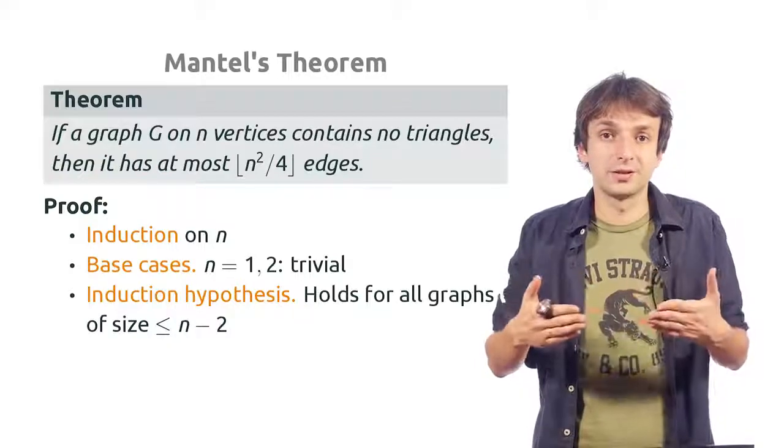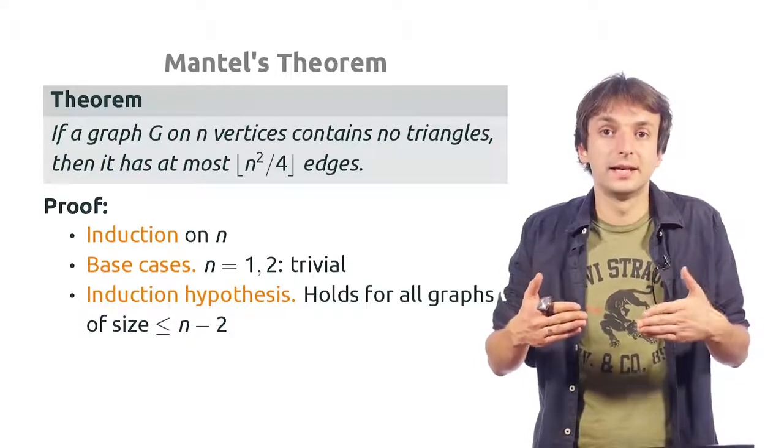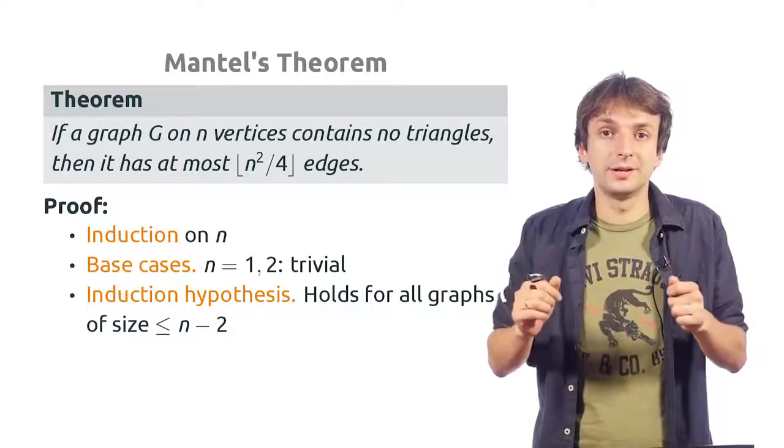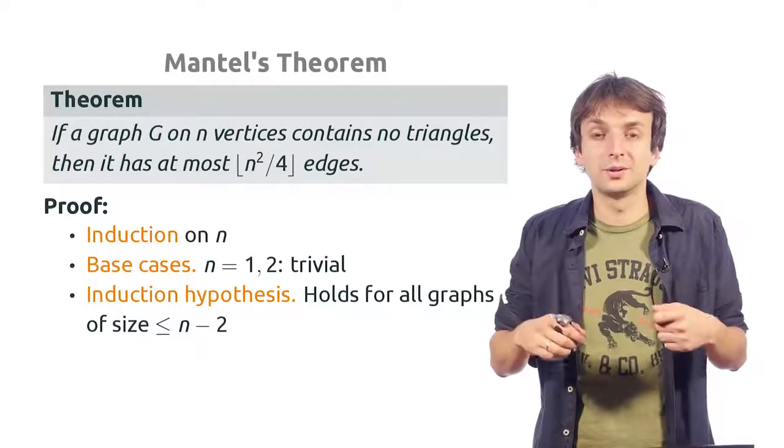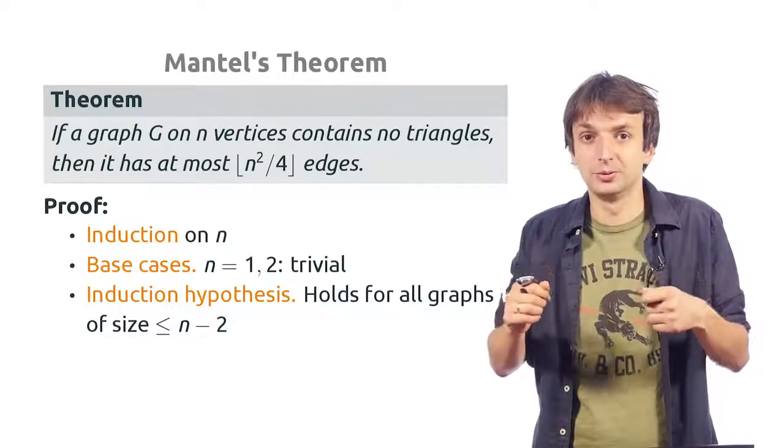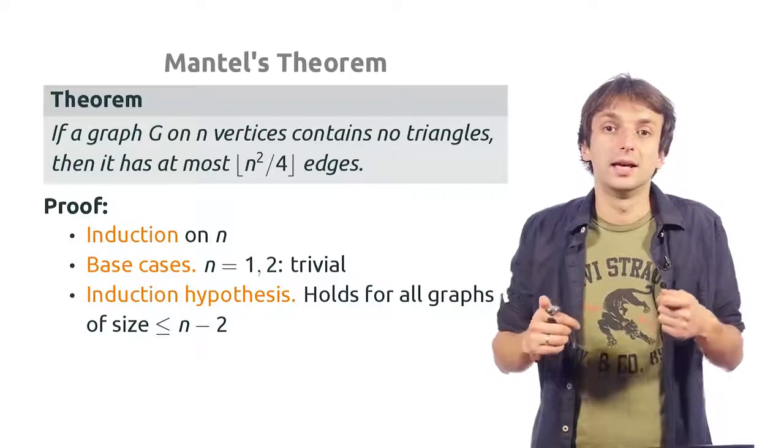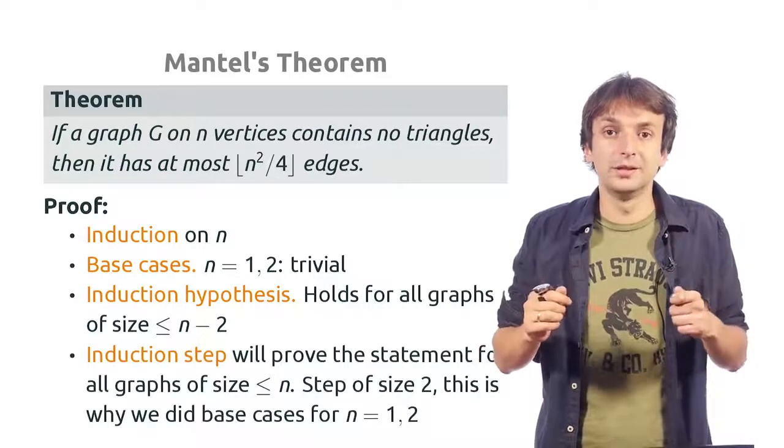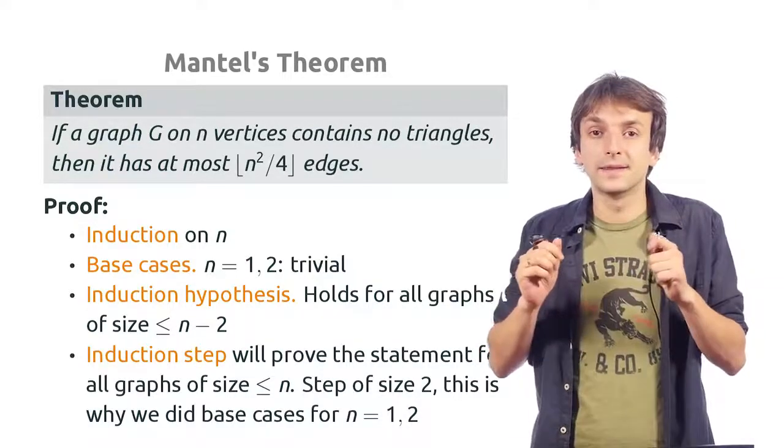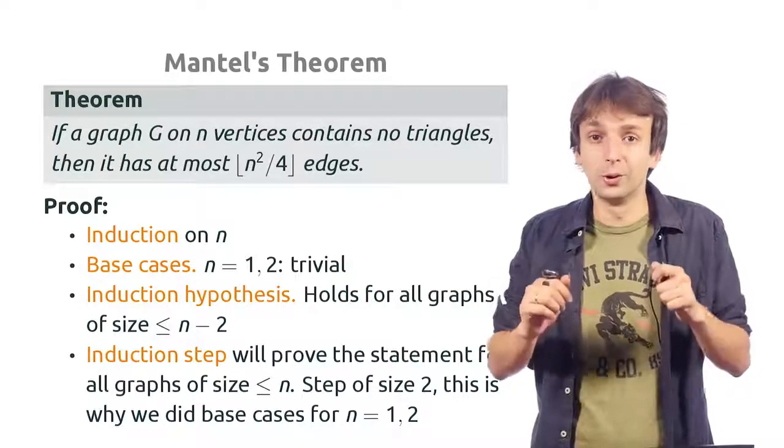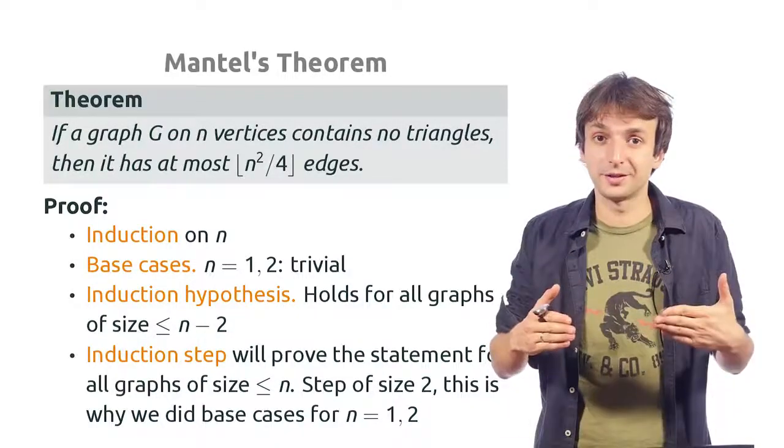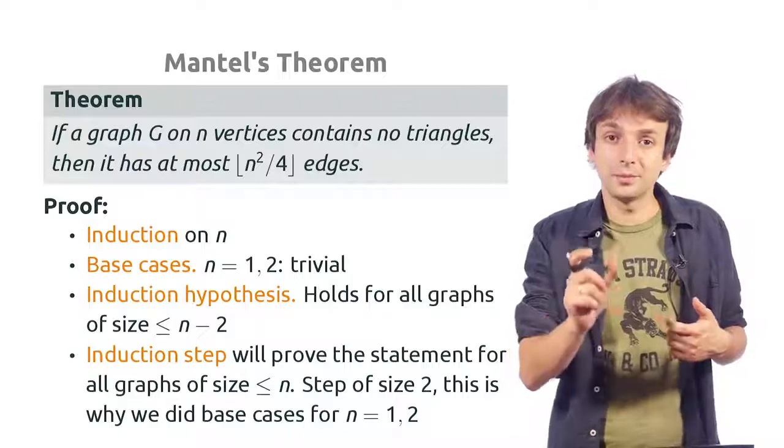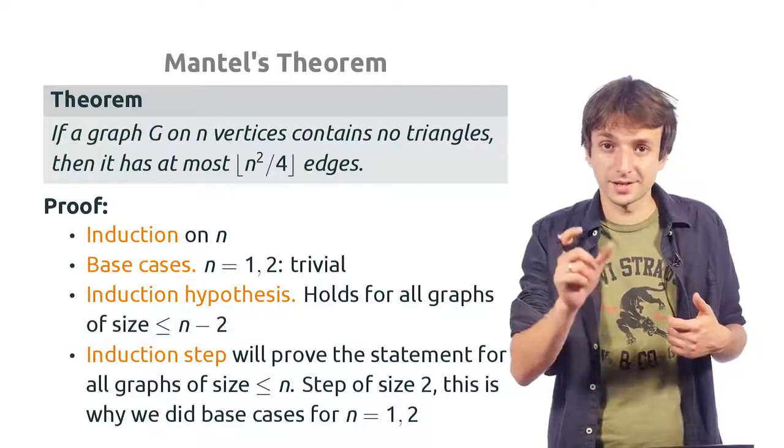The induction assumption, induction hypothesis, will be that the statement of theorem holds for all graphs on at most k minus 2 vertices. And the induction step would be to show that the statement also holds for all graphs on at most k vertices. Note that the step of the induction in this case is of size 2.